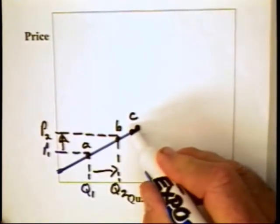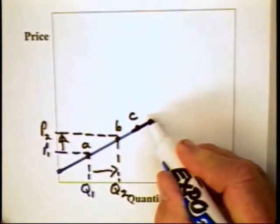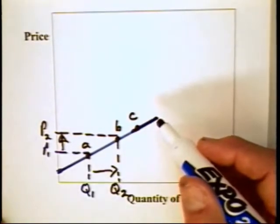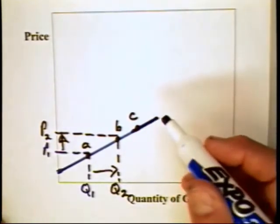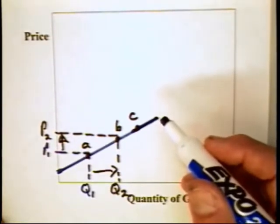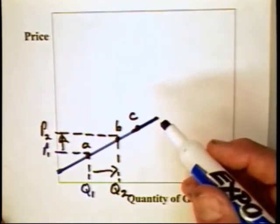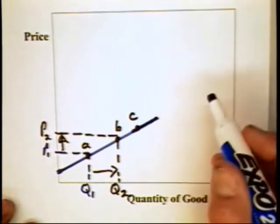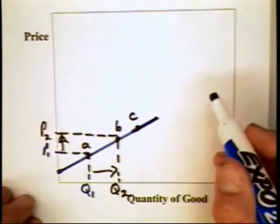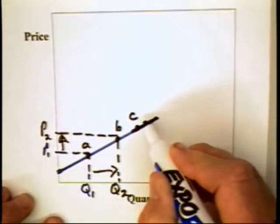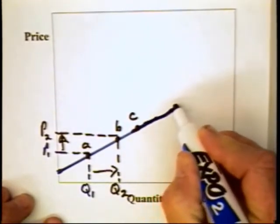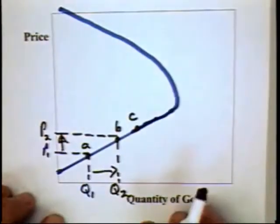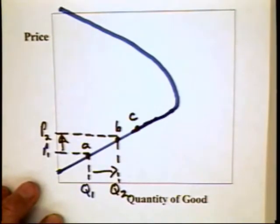If we continue to raise the price, should we expect consumption to always rise, even with greater prestige associated with the good? The answer is no, because at some very high price, consumers will be priced out of the market. There will be fewer consumers willing or able to buy the goods. The moral of the story is this demand curve has a backward bending portion.